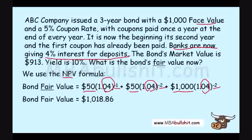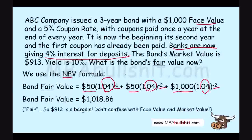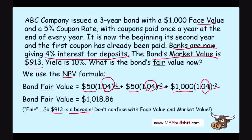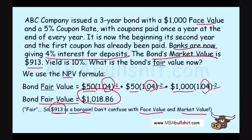So what does this mean? The bond market value — the actual price the bond is being sold for in the market — is $913, which is a bargain. It's being sold for only $913 but the actual fair value is $1,018. Remember, do not confuse the bond's fair value with the bond's face value or the bond's market value.